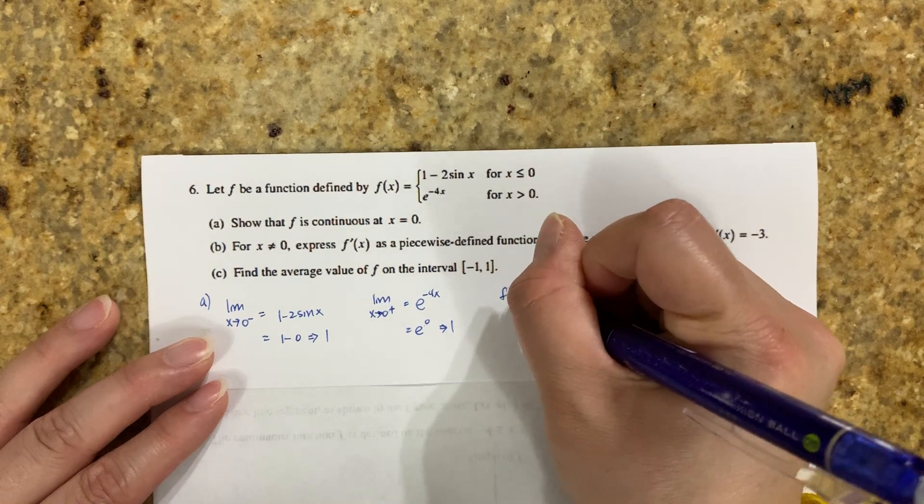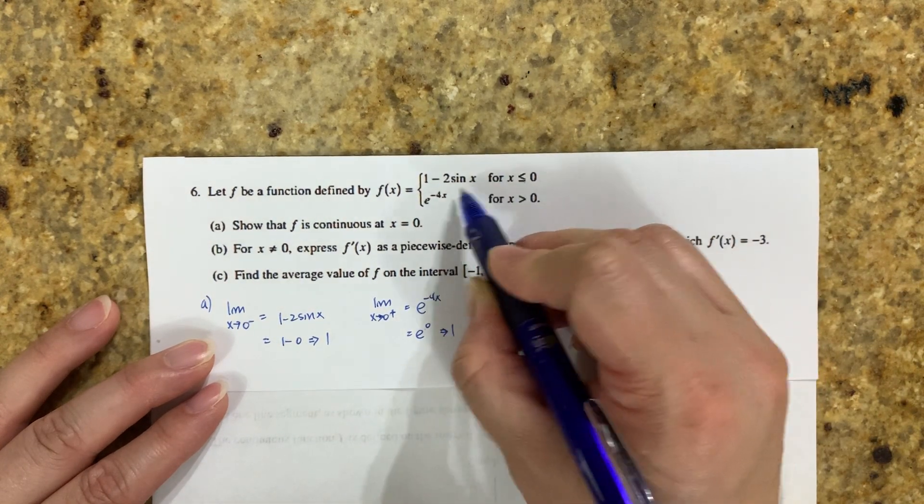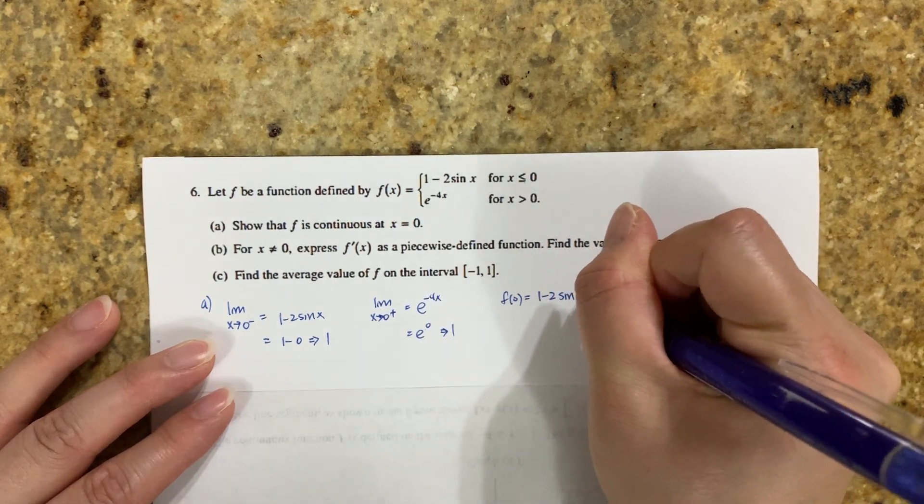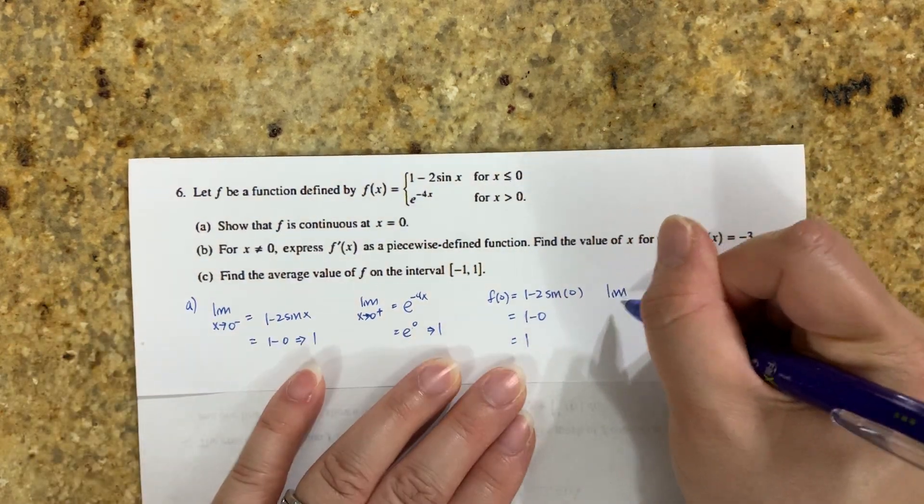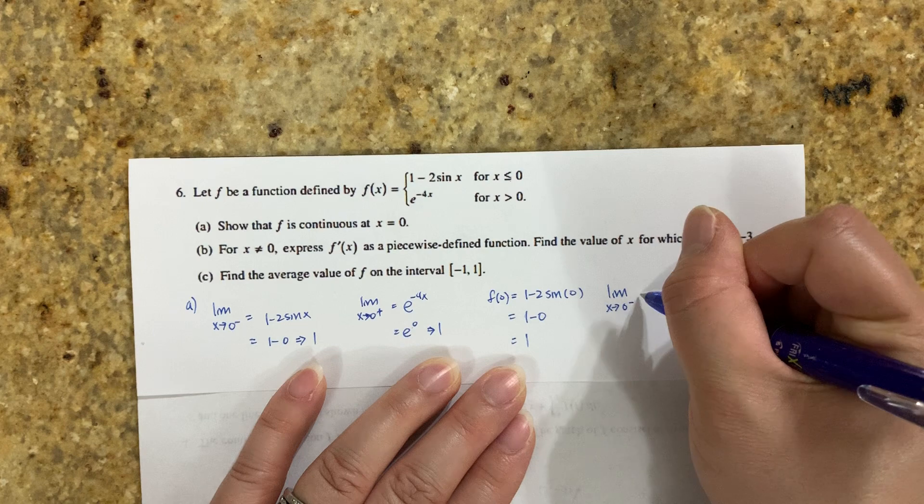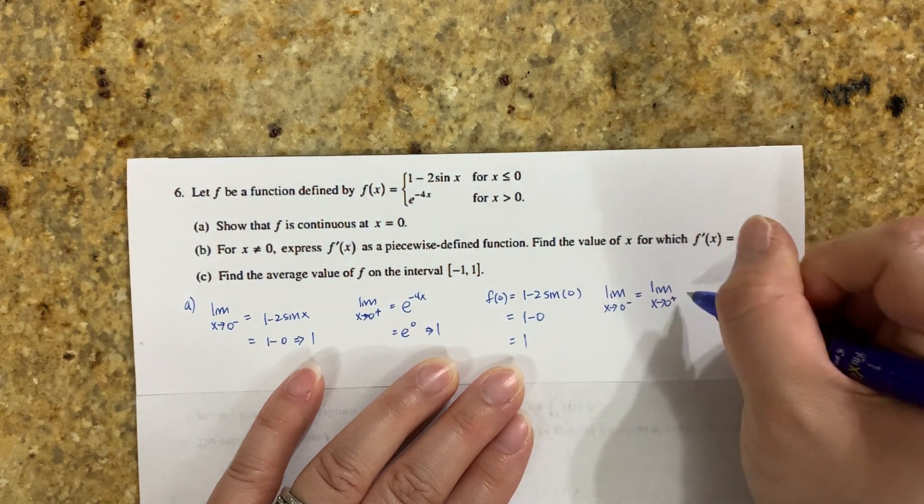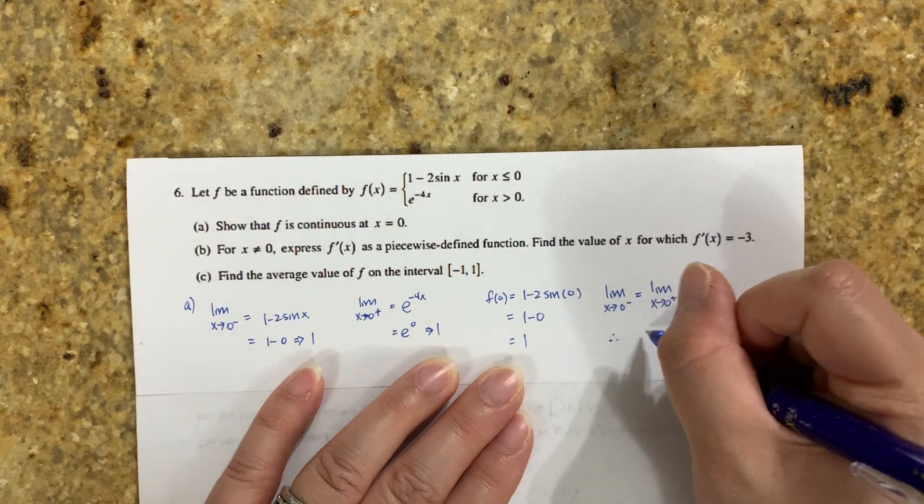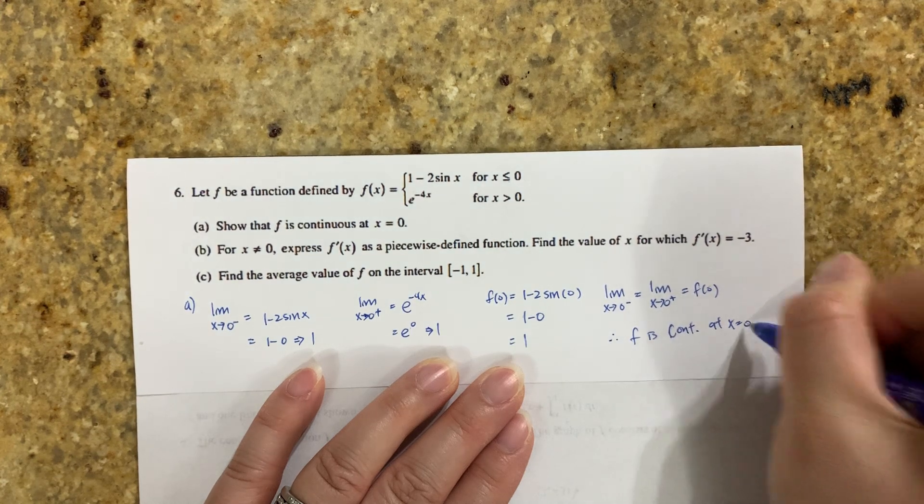What about f(0)? Well, f(0) is only defined where x = 0, so 1 - 2sin(0) = 1. Since limit as x approaches 0 from the left equals limit as x approaches 0 from the right equals f(0), therefore f is continuous at x = 0.